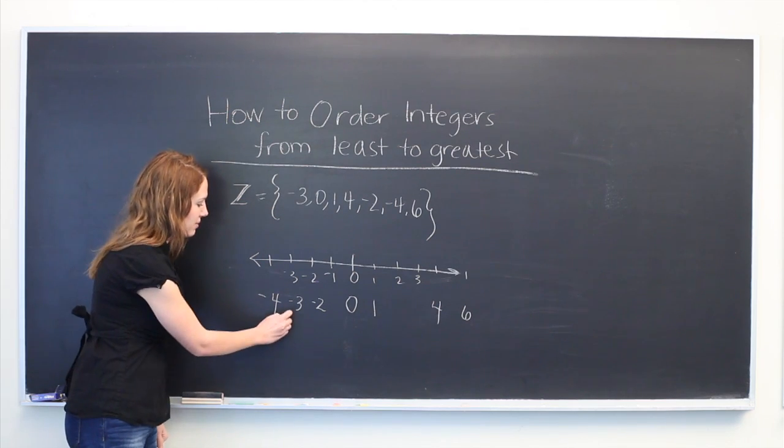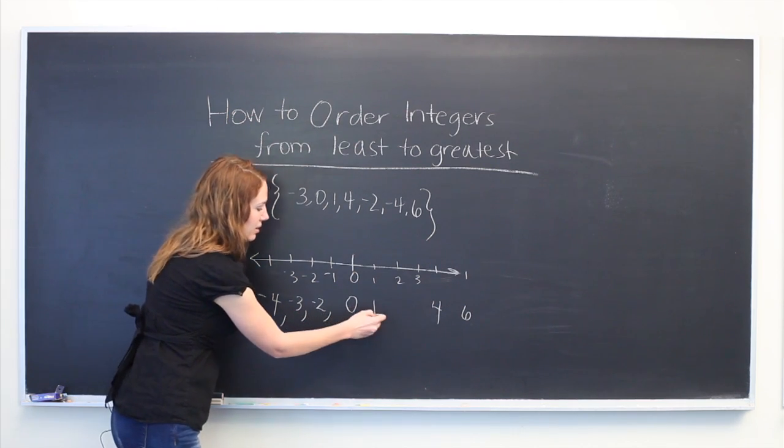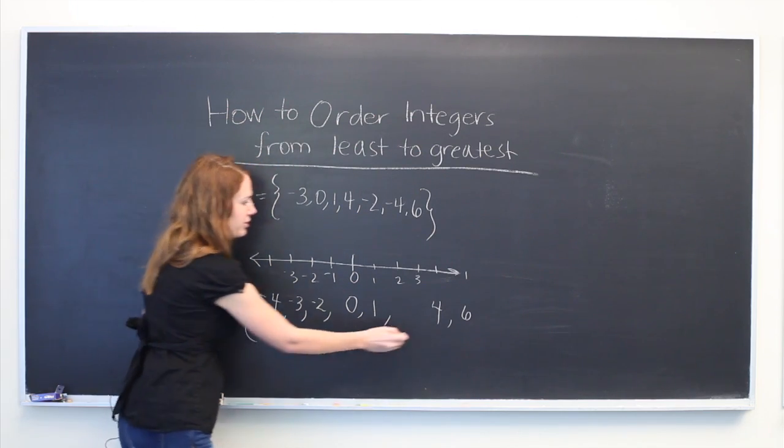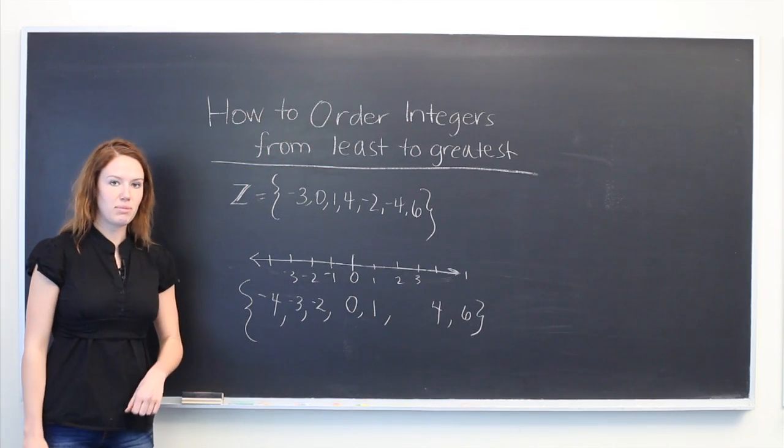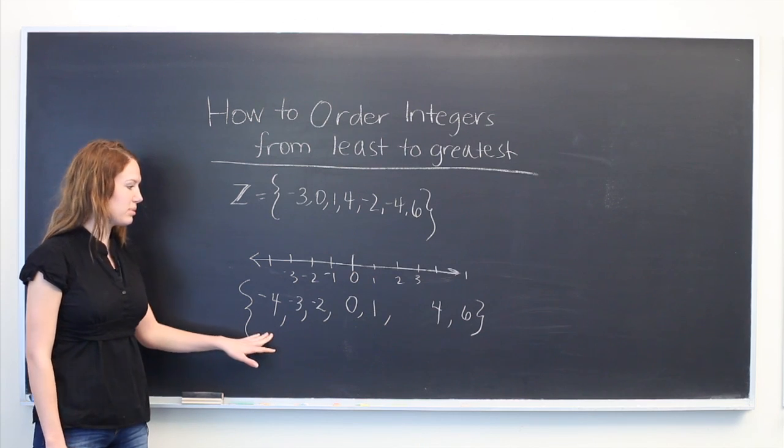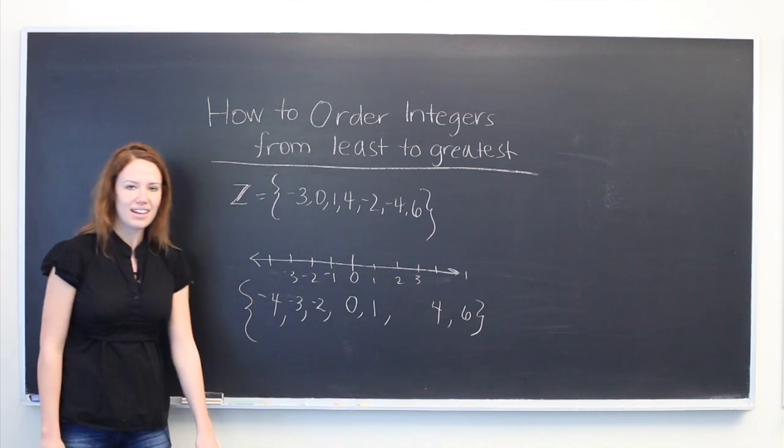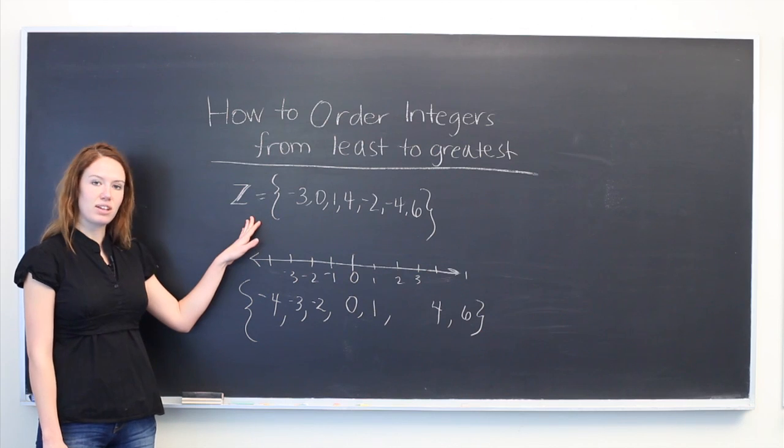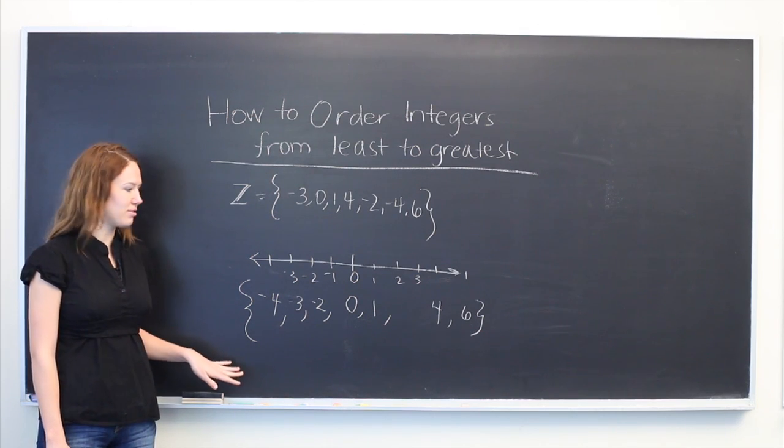We can write these as a series of values, and if we match them along the number line, they will be in order from least to greatest. Thanks for watching. This video explained how to take a set of integers and put them in order from least to greatest.